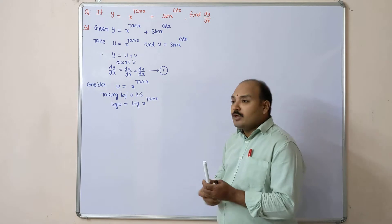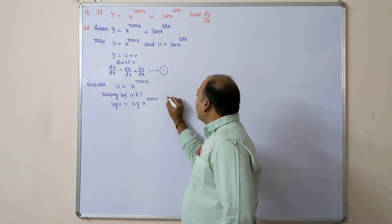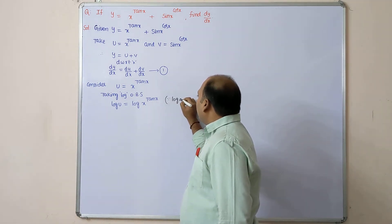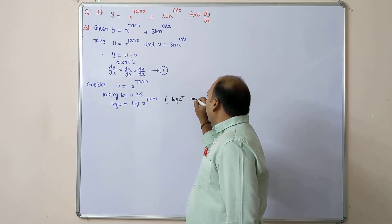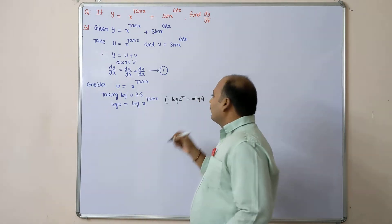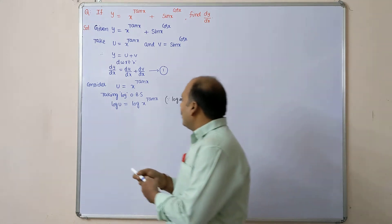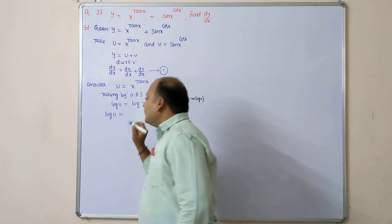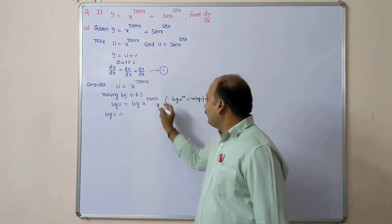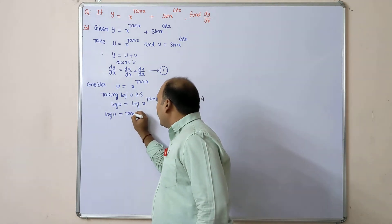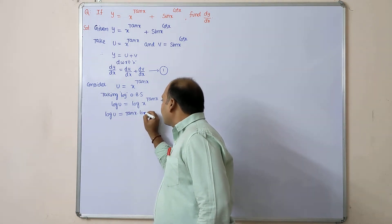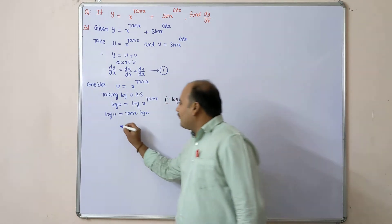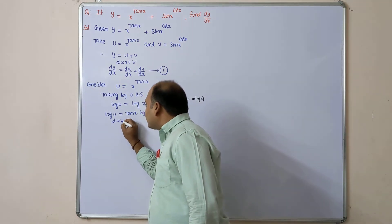Here we apply the log a^m formula: log(a^m) = m · log a. So log u = tan x · log x. Now differentiate with respect to x.